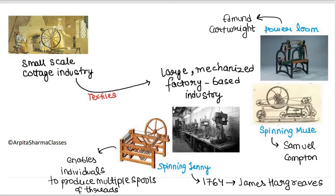There were different innovations. In 1764, James Hargreaves invented the spinning jenny. Samuel Compton invented the spinning mule. Edmund Cartwright invented the power loom. All of these enabled people to work more efficiently and at greater speed. As speed increased, efficiency also increased.